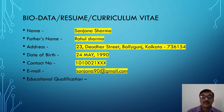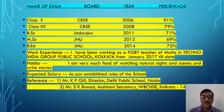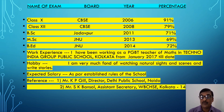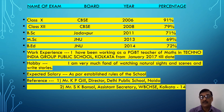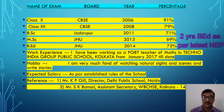Then comes Educational Qualification, which is part and parcel of a job application. The format is: Name of Exam, Board, Year, Percentage. Class 10: CBSE, 2006, 91%. Class 12: CBSE, 2008, 79%. BSc (3-year course): Jadavpur University, 2011, 71%. MSc: JNU, 2013, 69%. B.Ed: JNU, 2014 or 2015 — depending on whether it is a one-year or two-year course — 72%.